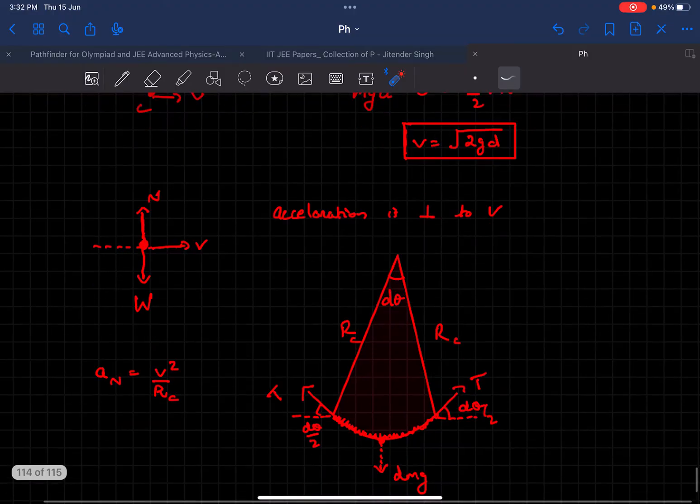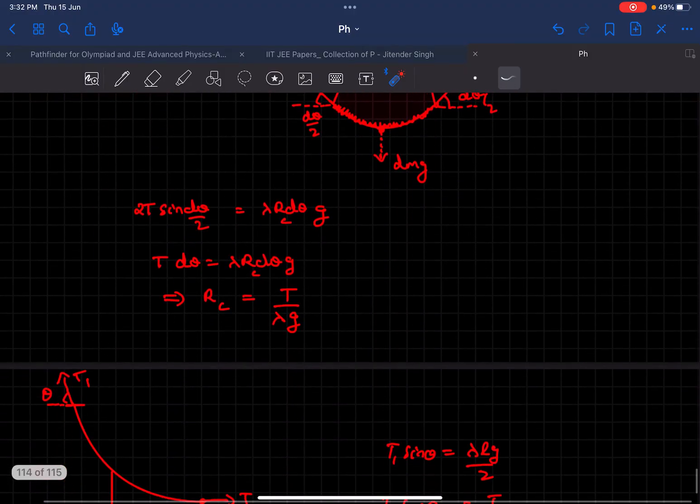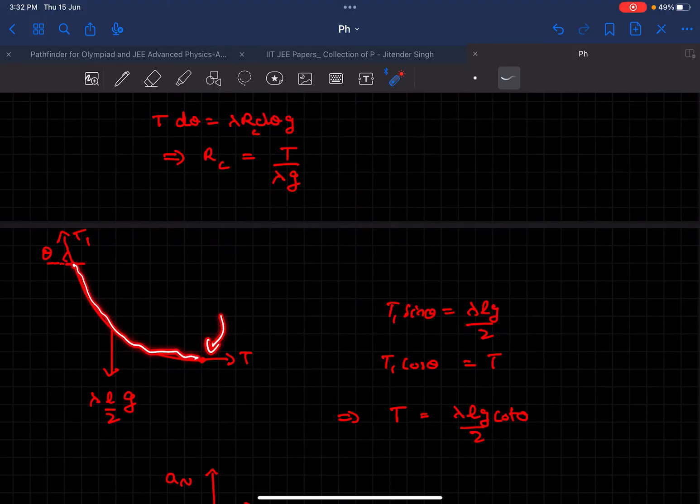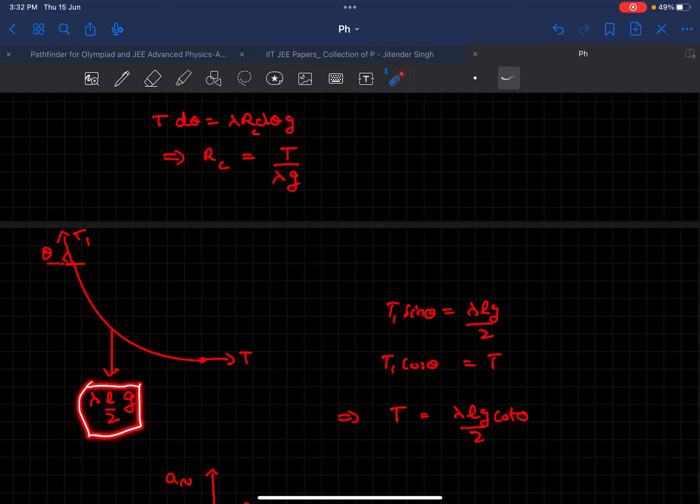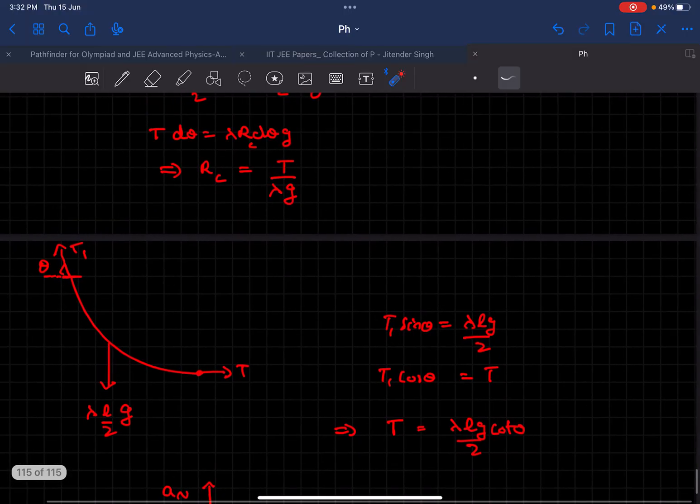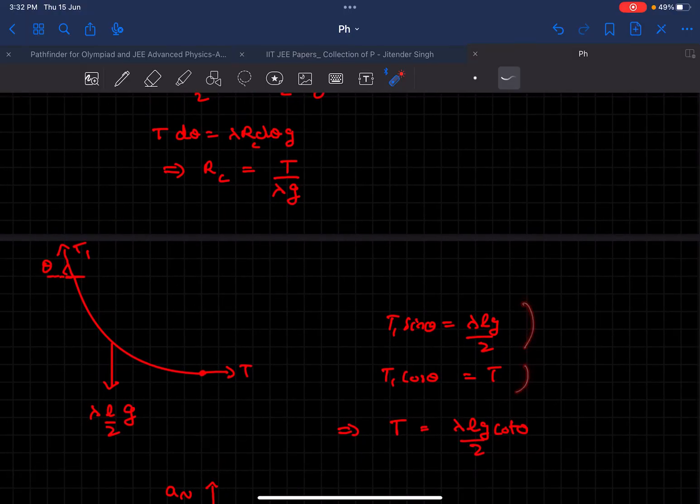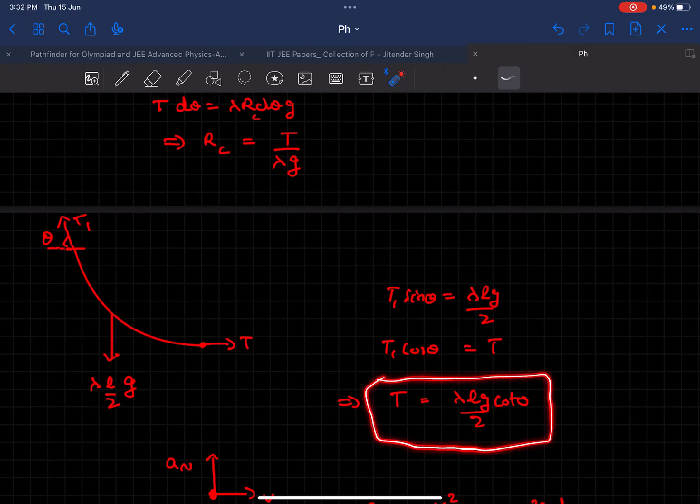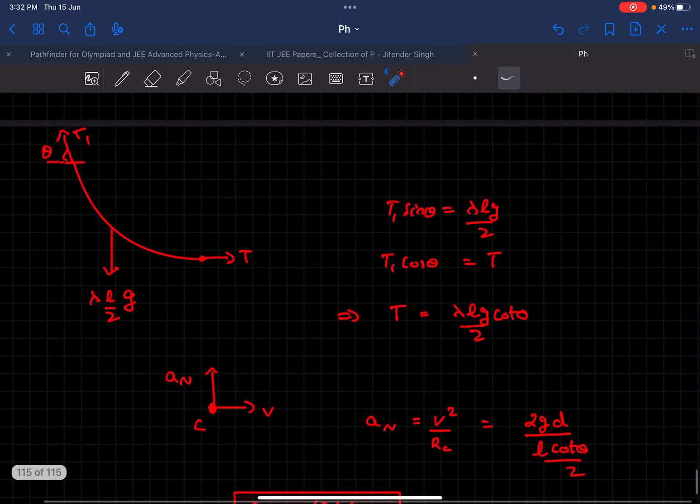Now we have to determine the tension at point C. For that, we'll draw the FBD of half the rope. The tension at this point is T, the tension at the topmost point is T₁, this angle theta is given, and the weight of the half rope is λlg/2, where λ is the linear mass density of the rope. Now balancing the forces, we'll get the value of tension to be λlg/(2cotθ).